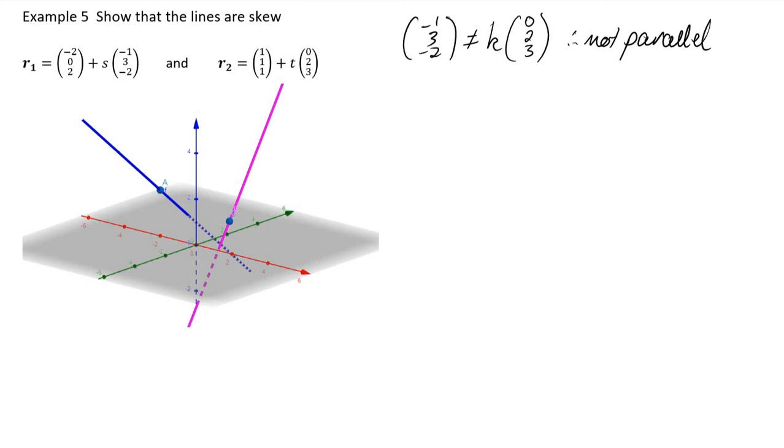If we look at the dot product of the direction vectors, we actually see that it's zero. So maybe these lines are perpendicular.